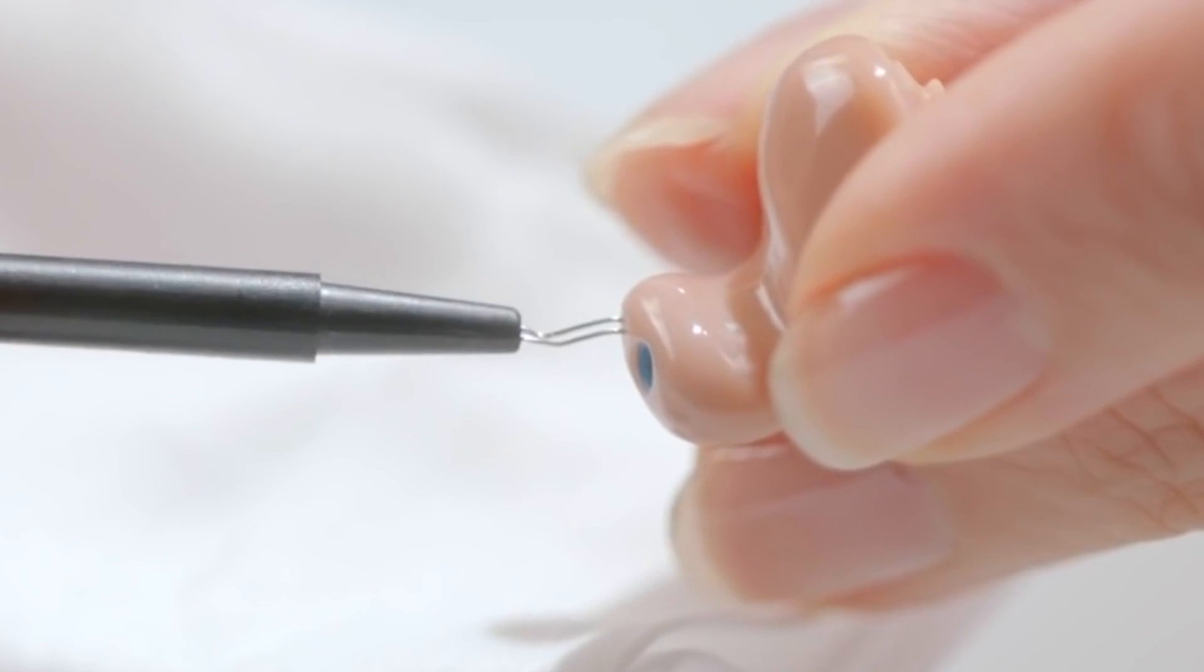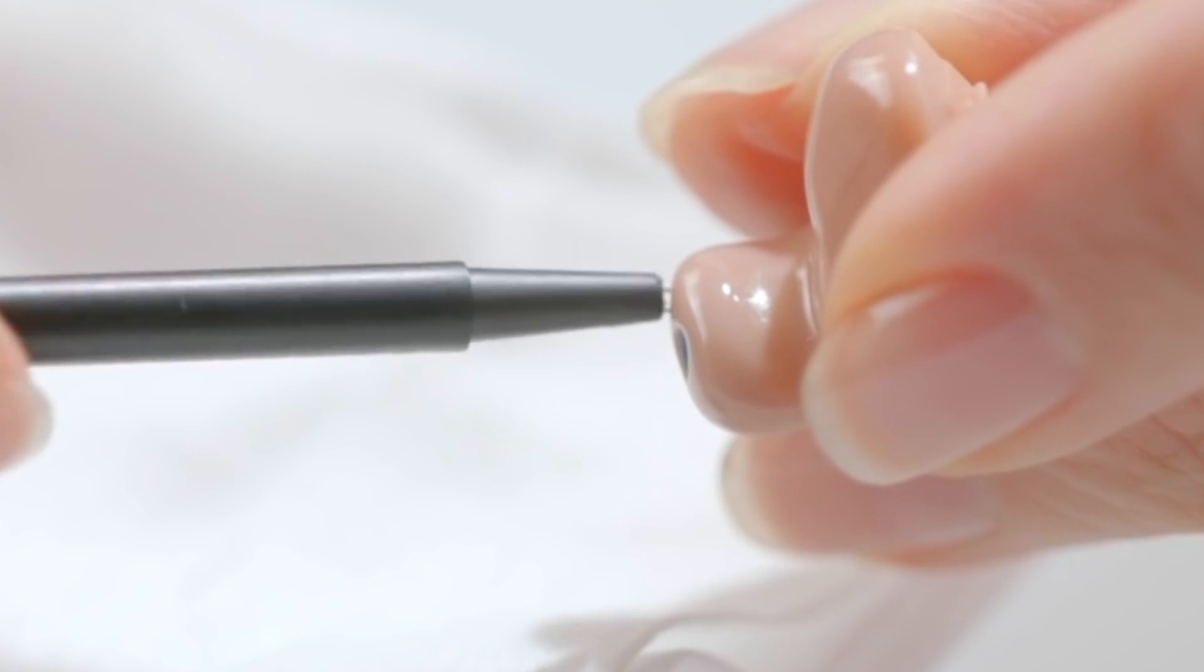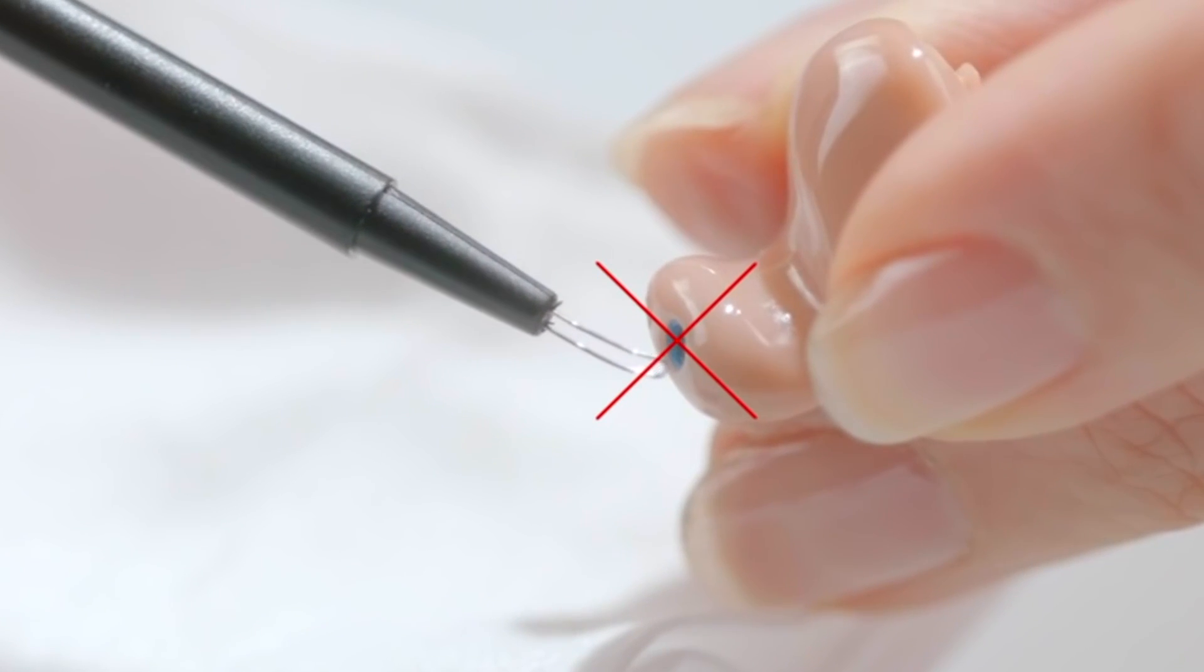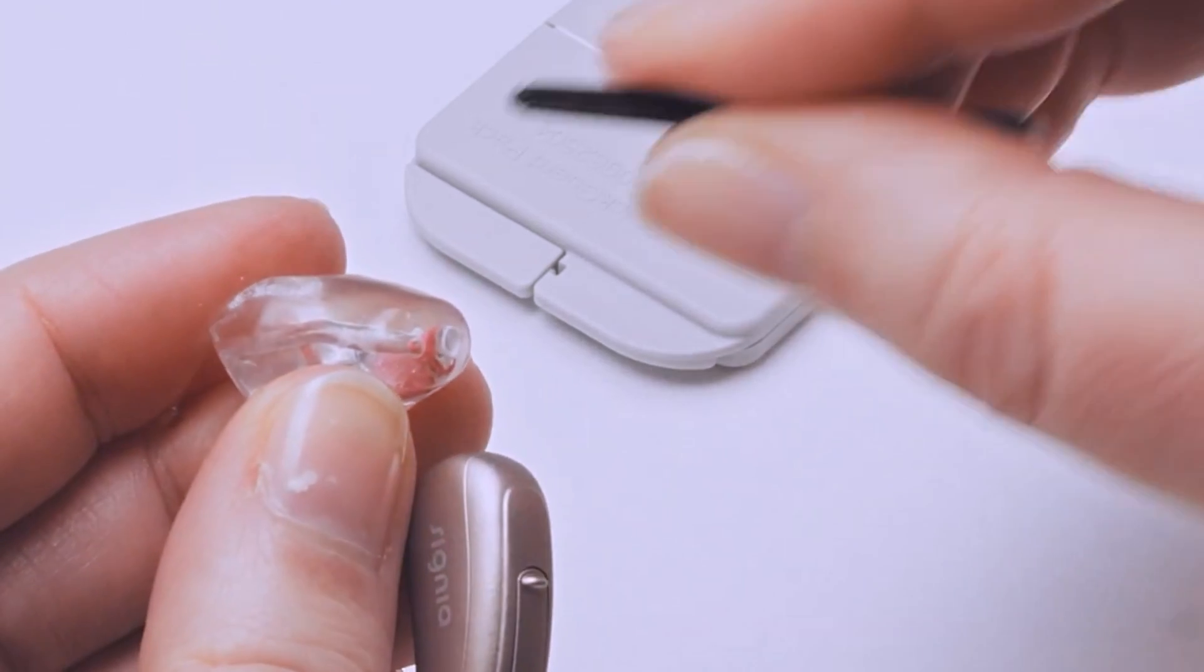For the vent opening, a tiny curette can also be used to remove any earwax debris located deeper into the vent opening. But do not use a curette to clean the wax guard. Rather, replace the wax guard with a new one.